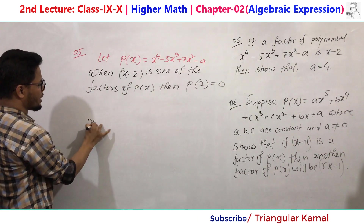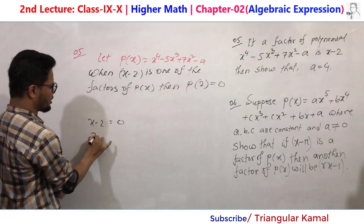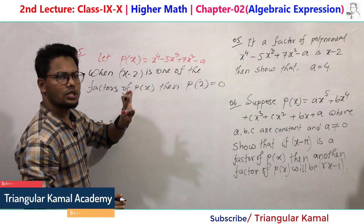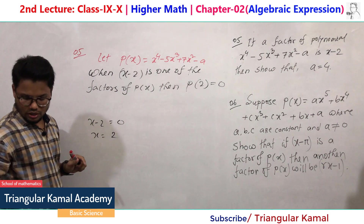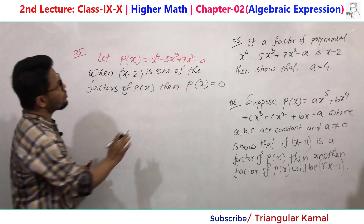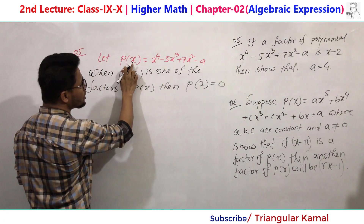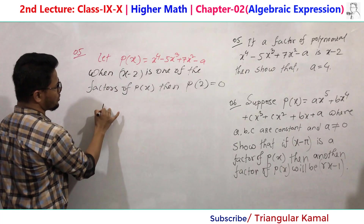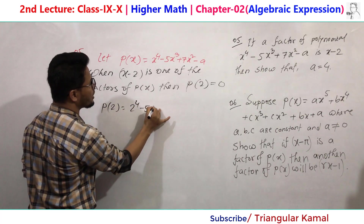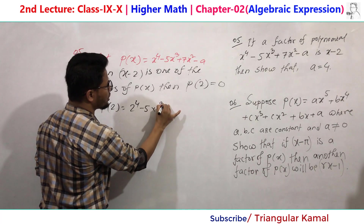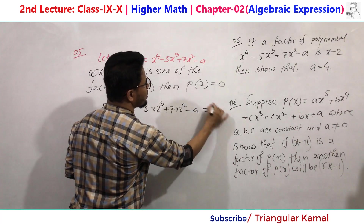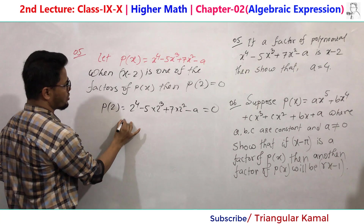This is called the remainder theorem. Since x minus 2 is a factor, x minus 2 equals zero, so x equals 2. Putting x equal to 2, the result will be zero. Now find p(2): replace x with 2, so p(2) equals 2 to the power 4, minus 5 multiplied by 2 cubed, plus 7 multiplied by 2 squared, minus a, and this equals 0 as per the remainder theorem.